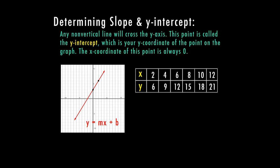So here we have a table that goes with this line. So the points 2, 6, 4, 9, 6, 12, 8, 15, and so on are all on this line. So we're going to use this table and the graph, and I'm going to show you several ways you can find your y-intercept and your slope to fill in this equation.